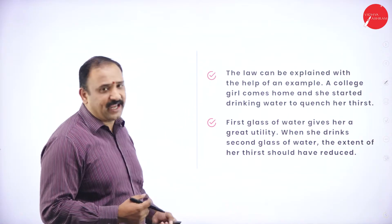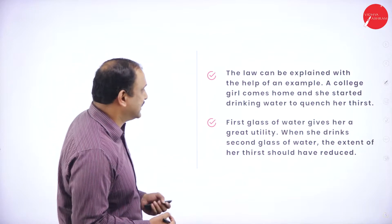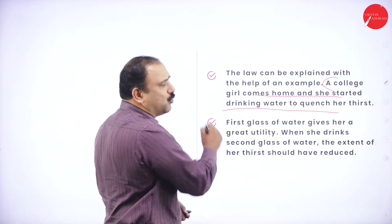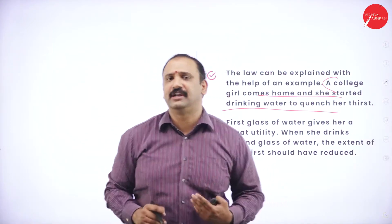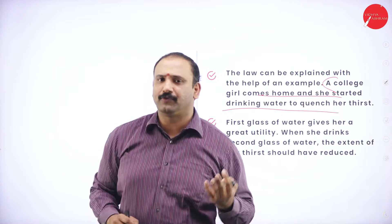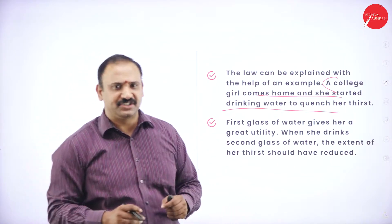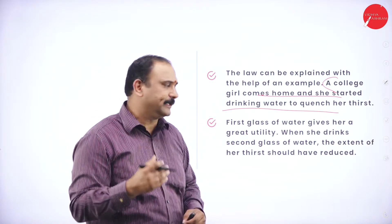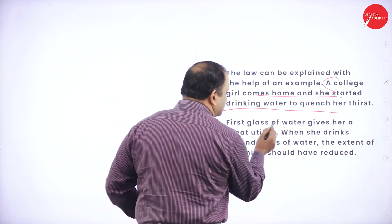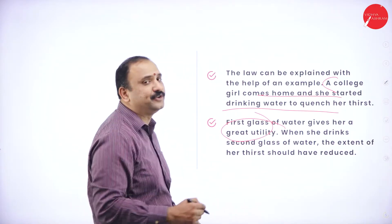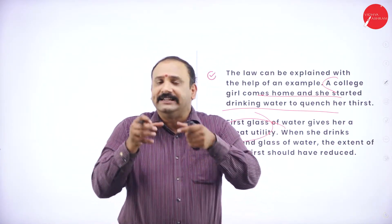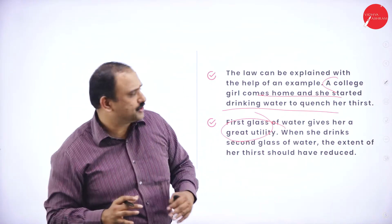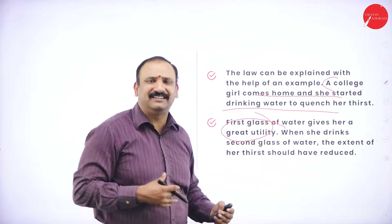The law can be explained with an example. A college girl comes home and she starts drinking water to quench her thirst. Naturally, because she has come out from the hot sun, she will be feeling thirsty. The first glass of water she drinks, she gets a great satisfaction, great utility because she consumes the entire glass of water. She is really very thirsty.